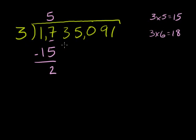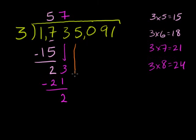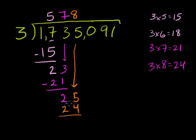Now we bring down this 3. 3 goes into 23 how many times? 3 times 7 is 21, and 3 times 8 is 24 — too big. So 3 goes into 23, 7 times. 7 times 3 is 21, and we subtract. 23 minus 21 is 2. Now we bring down the 5 — you can appreciate why it's called long division now. 3 goes into 25 how many times? 3 times 8 gets close, and 3 times 9 is too big. So it goes in 8 times. 8 times 3 is 24. 25 minus 24 is 1.